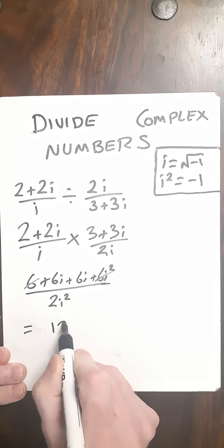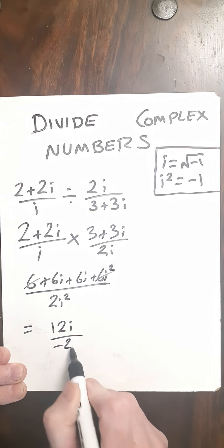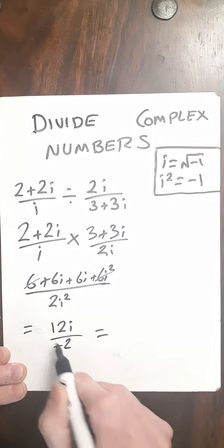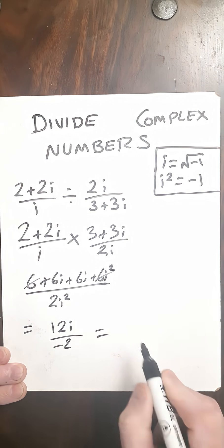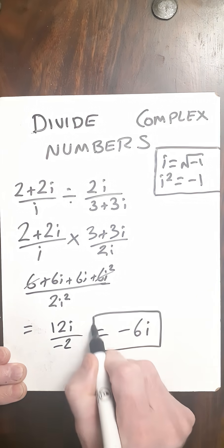6i plus 6i is 12i, and over 2i squared, i squared is minus 1, so that's over minus 2. And then divide both numerator and denominator by minus 2, and we'll get minus 6i as our answer, and we are done.